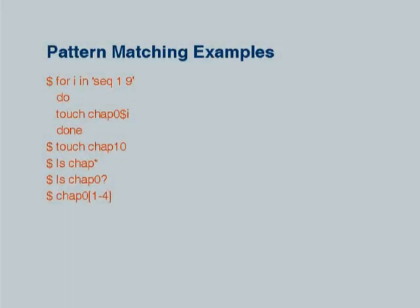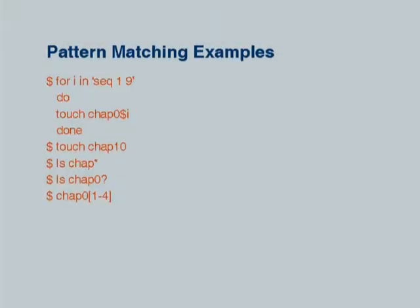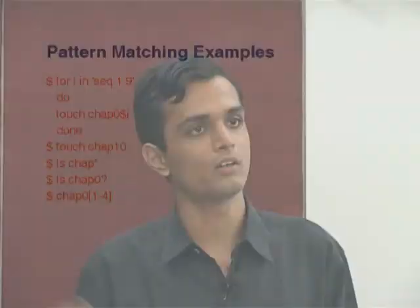So it says 1, 2, 3, 4, 5, 6, 7, 8, 9 — and i is a variable. When you say touch chap0$i, $i will give the value of i. So it will be chap01, chap02, chap03 — all these files it will touch, and the whole thing is encapsulated in a do-done block. The last line is touch chap10, so it will create a file called chap10 and update the timestamp.